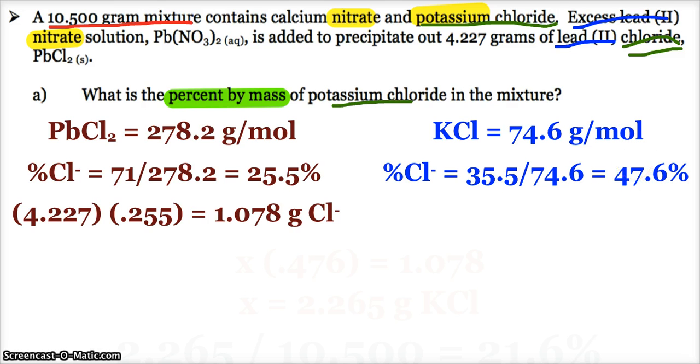Alright, what the link is, however much potassium chloride I have, which is what I'm trying to find, the mass of potassium chloride, whatever it is, 47.6% of it is chloride. And 47.6% of it is going to equal my 1.078 grams.